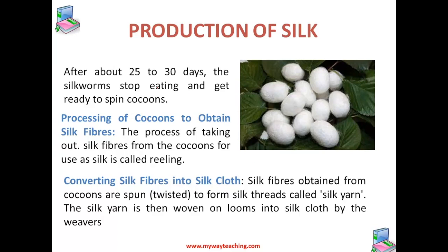After 25 to 30 days, the silkworm stops feeding and gets ready to spin a cocoon. Once the silkworm produces cocoons, all the cocoons are collected at one place. The pile of cocoons is then used for obtaining silk fiber.